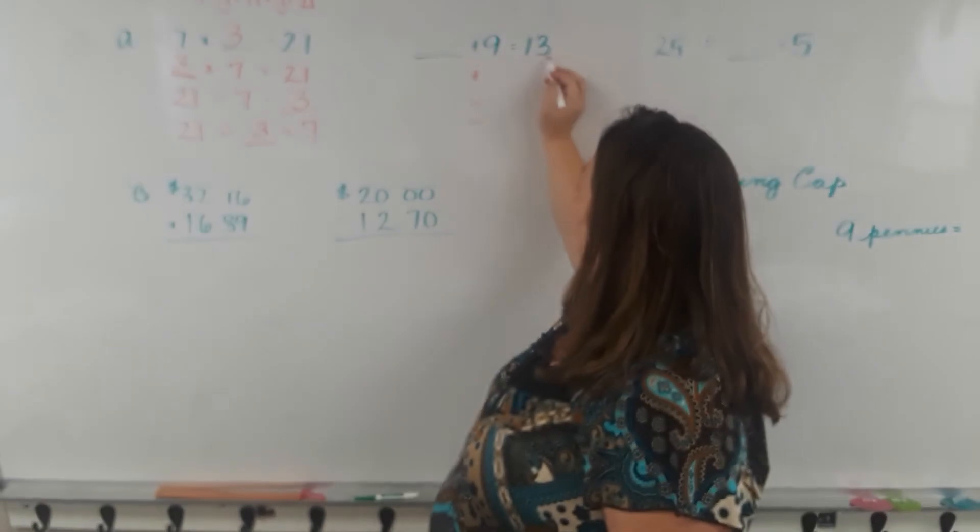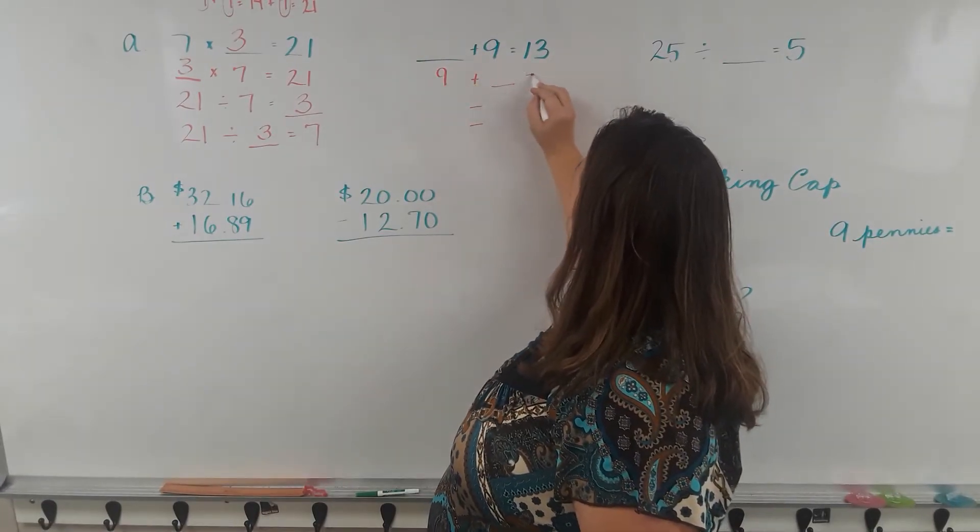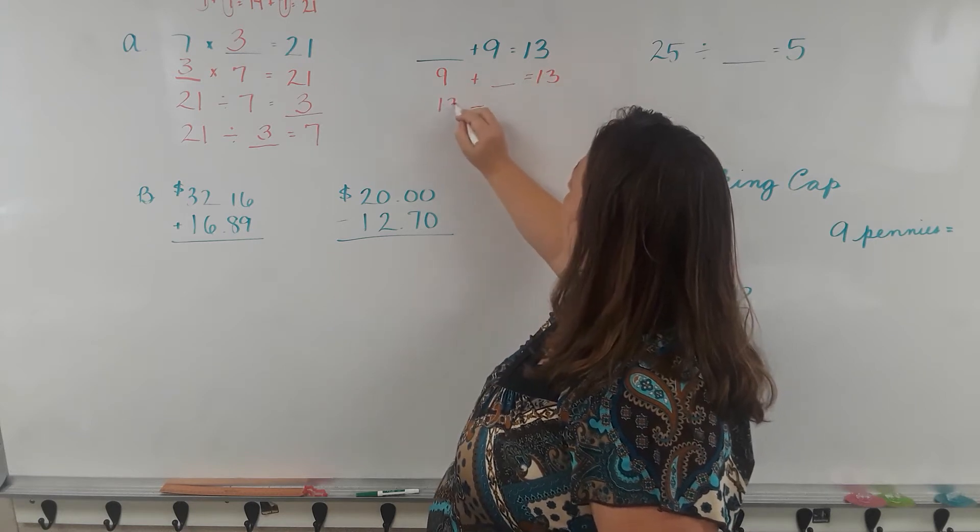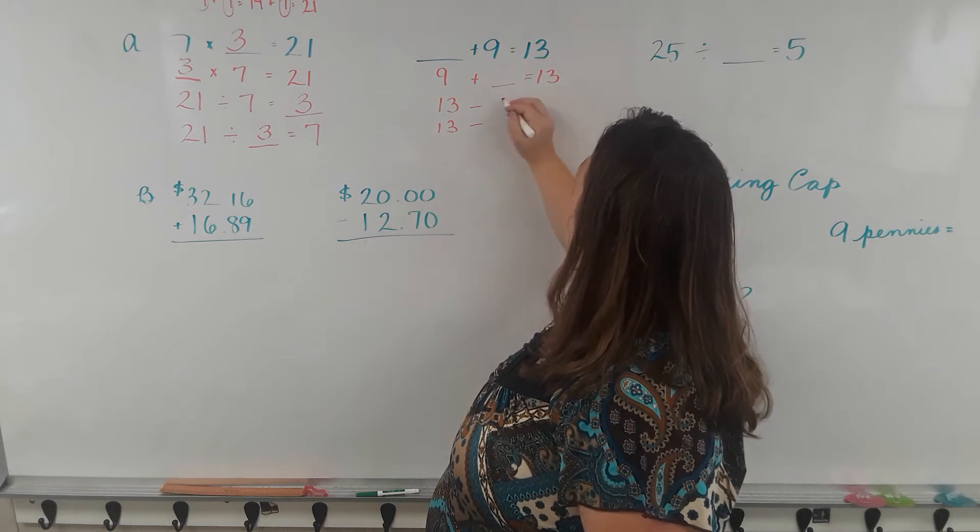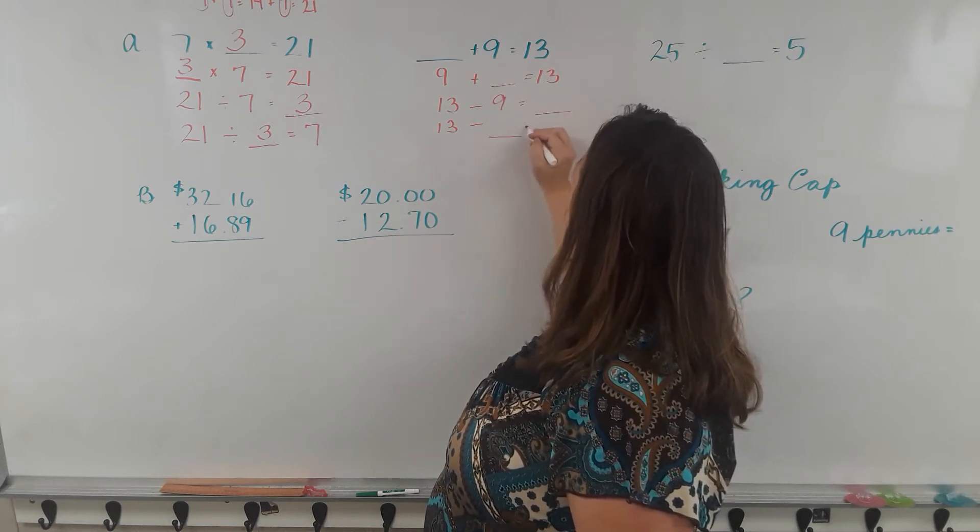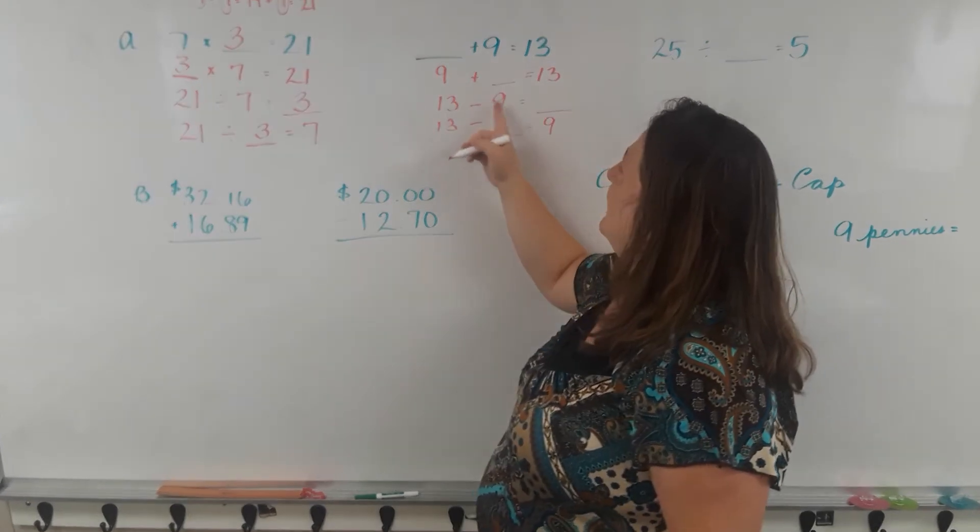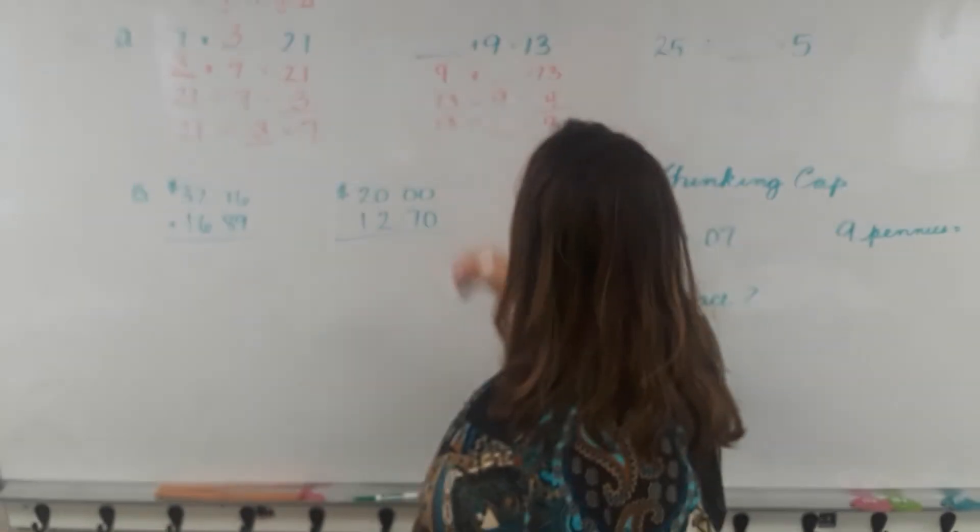So for our fact family here we need two addition and two subtraction. A number plus 9 equals 13, 9 plus a number equals 13. And when we subtract we begin with the larger numbers: 13 minus 9 equals a number, and 13 minus a number equals 9. 13 minus 9 equals 4.